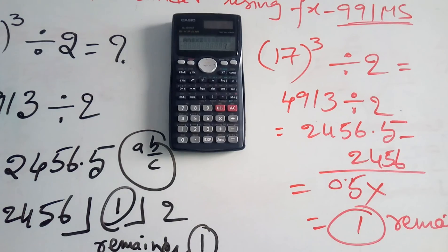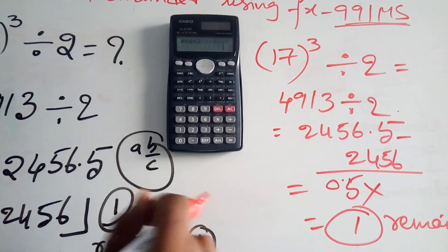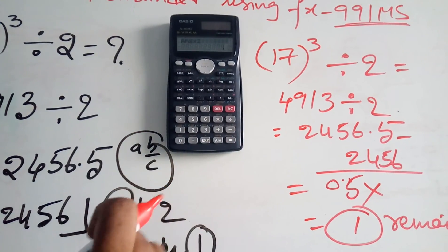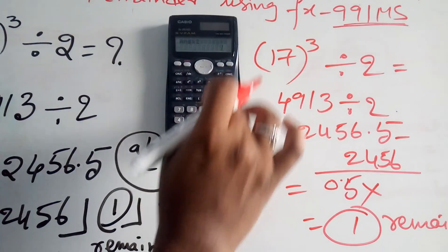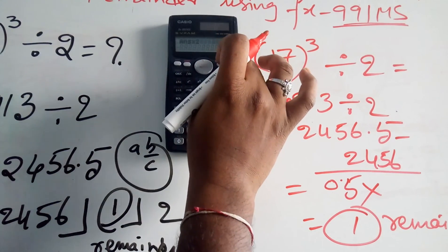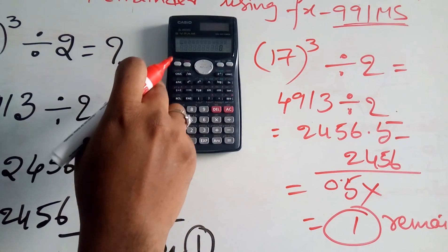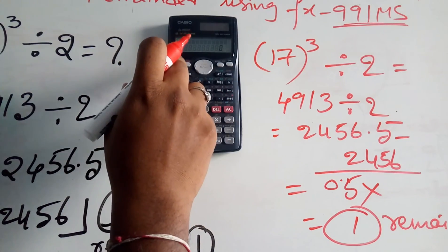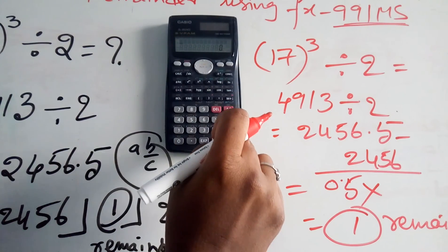To stop the calculator, press the Shift button and it will automatically turn off.